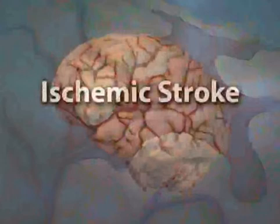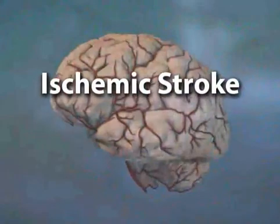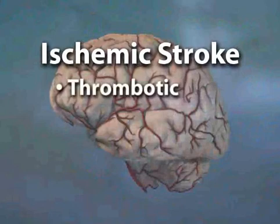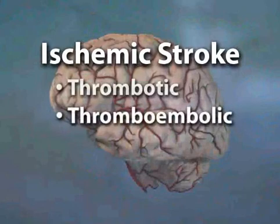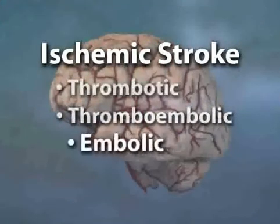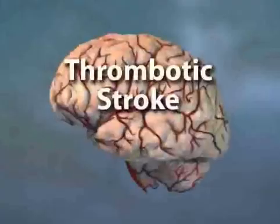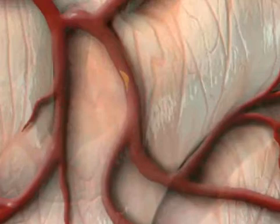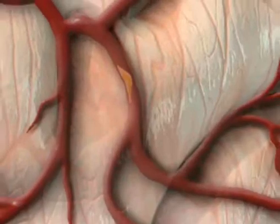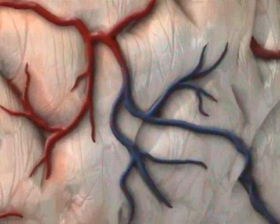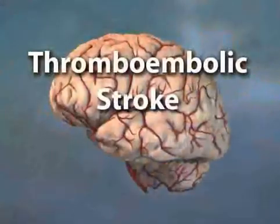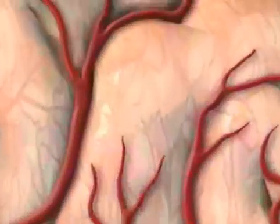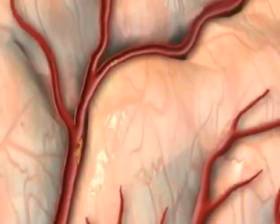The second type of stroke is ischemic stroke, which occurs when blood flow through a vessel is blocked. There are three categories of ischemic stroke: thrombotic, thromboembolic, and embolic. A thrombotic stroke occurs when flow in a blood vessel in the brain is obstructed by arteriosclerosis. A thromboembolic stroke occurs when a clot breaks off from an arteriosclerotic plaque and lodges in a downstream vessel, blocking blood flow.